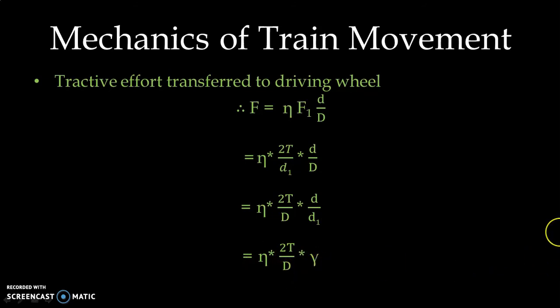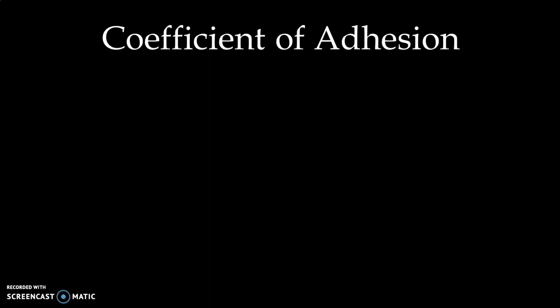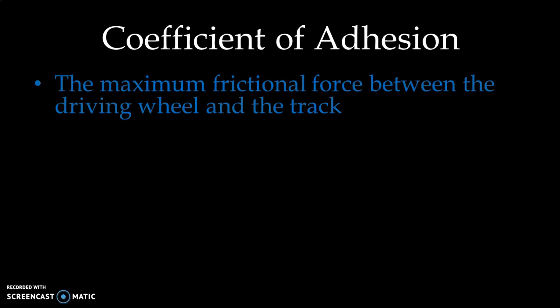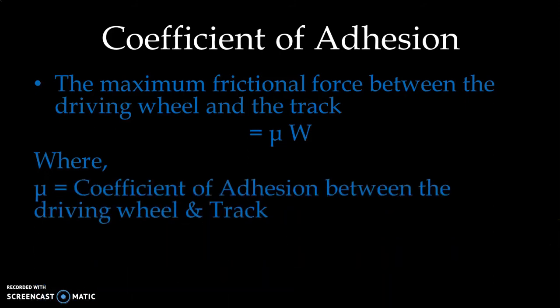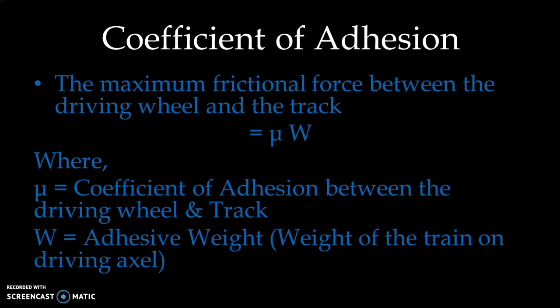Now let us see the coefficient of adhesion. The amount of tractive force generated depends on the total weight coming to the driving axle and the coefficient of adhesion. The maximum frictional force between the driving wheel and the track is equal to mu × W, where mu is the coefficient of adhesion and W is the weight of the train on the axle. To avoid slip, the tractive effort must be either equal to or less than this product mu × W.